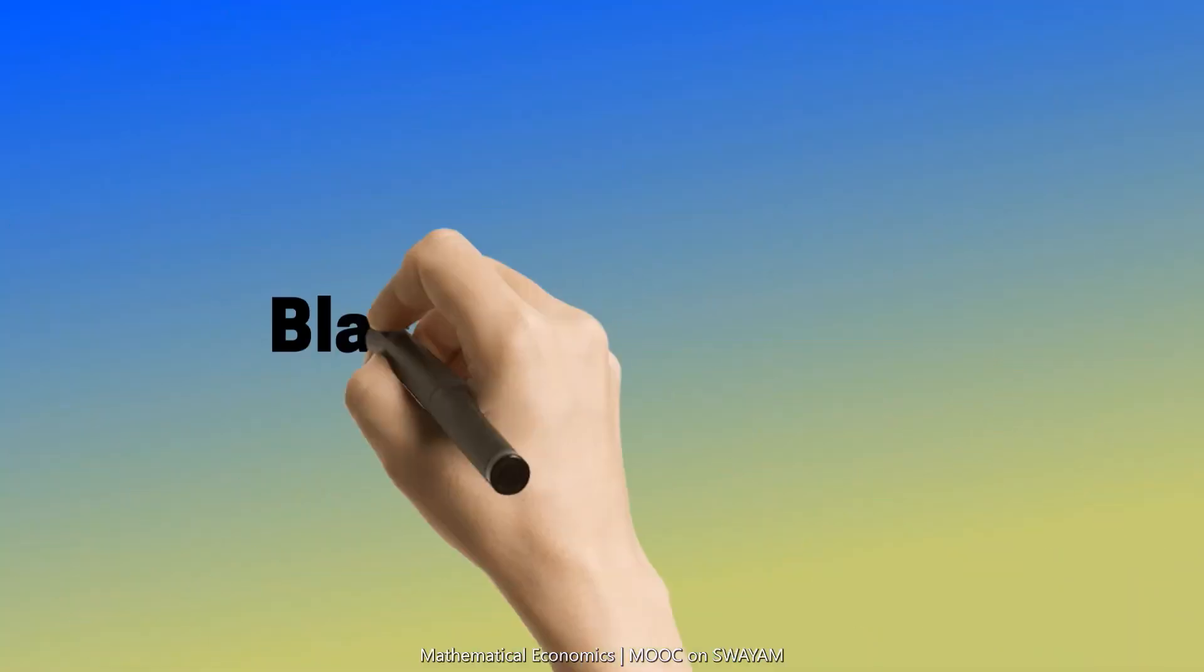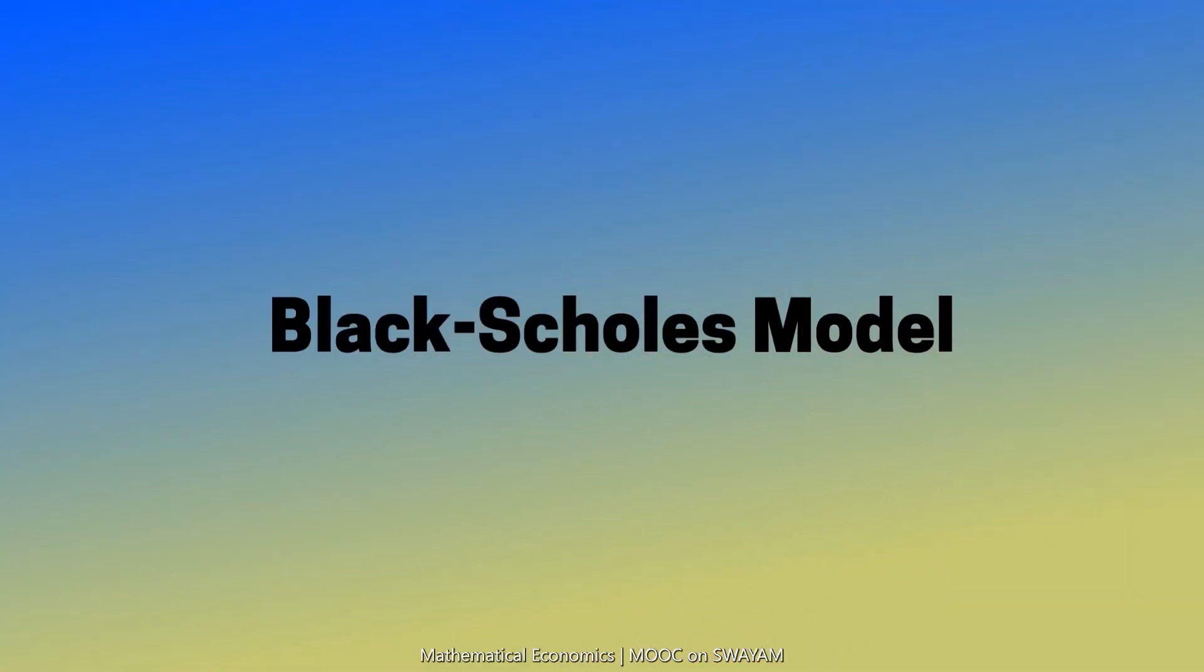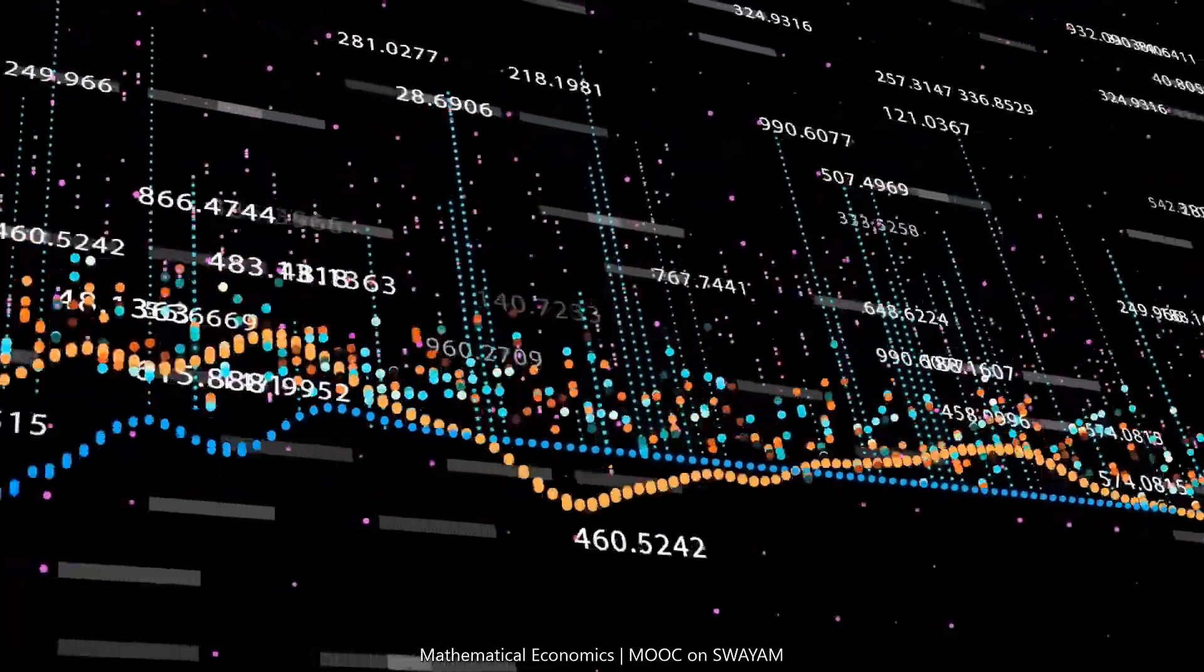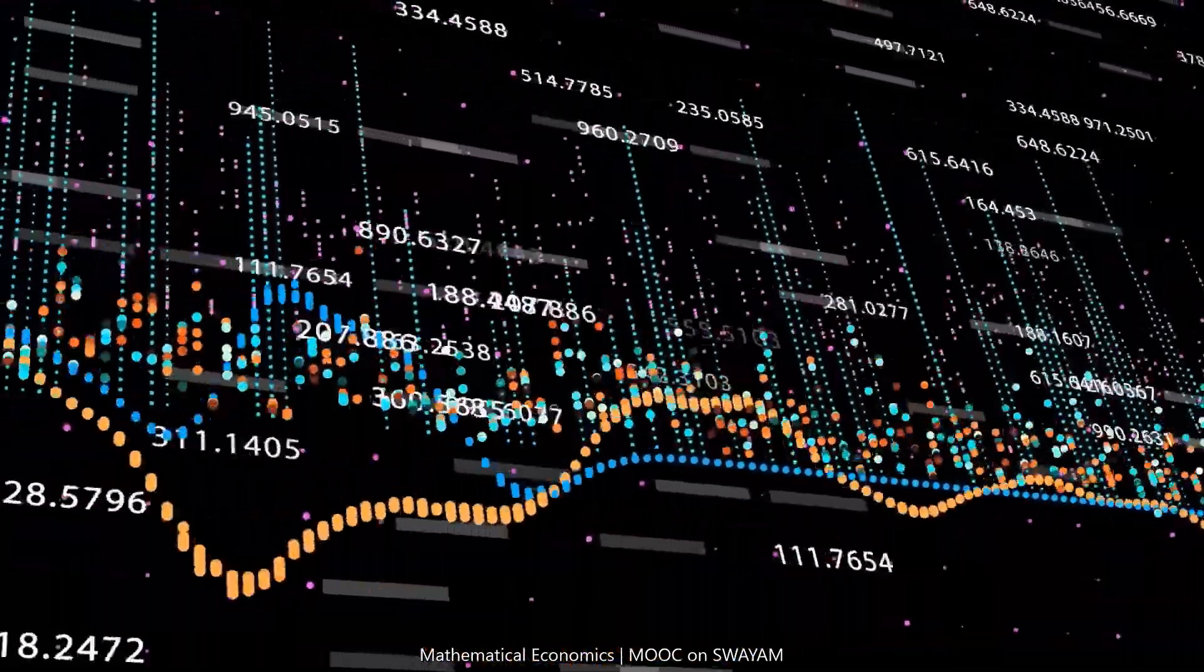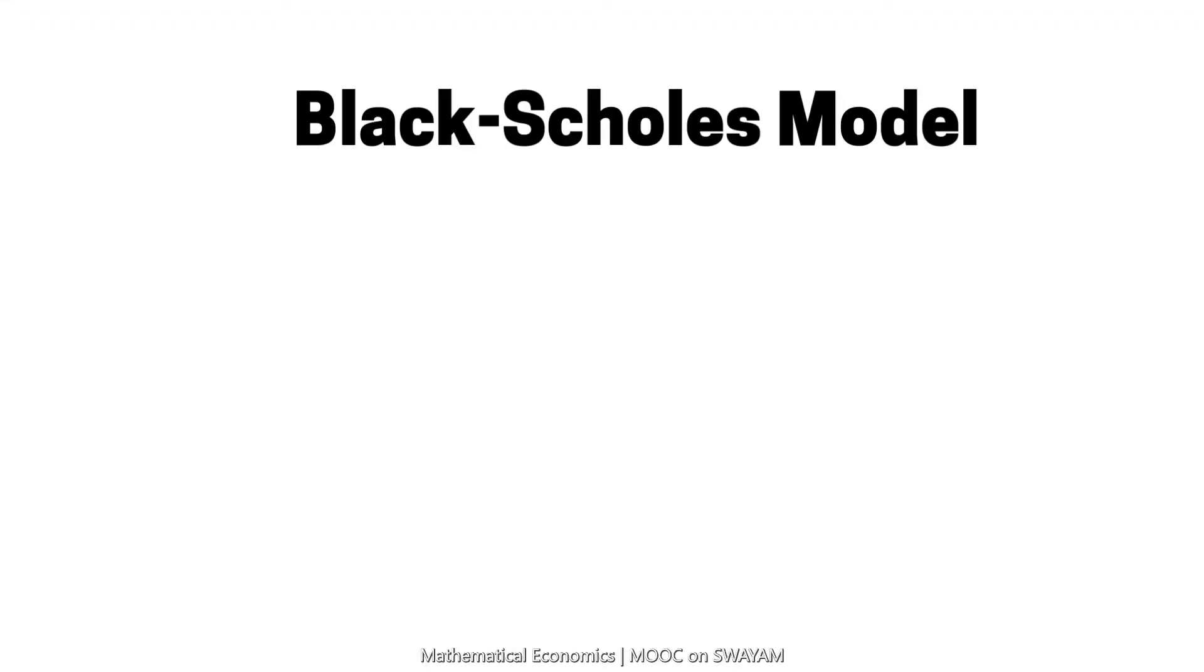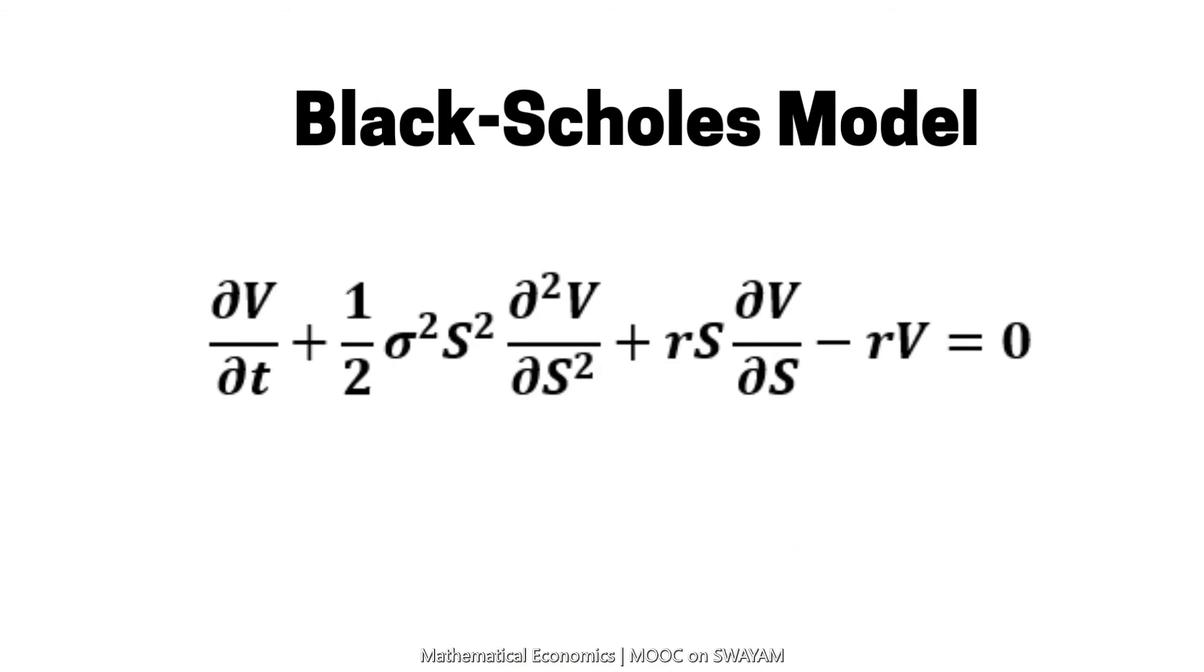The Black-Scholes model is used for dynamics of a financial market containing derivative investment instruments. V is the price of the option as a function of stock price S and time T. r is the risk-free interest rate and σ is volatility of the stock.